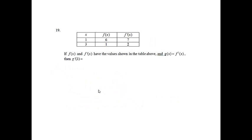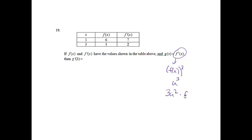Question 19. f of x and f prime of x have values shown in the table, and g of x equals f cubed of x. Find g prime of 3. This function is the same as f of x raised to the third power. Using a u substitution, calling this u cubed, the derivative is 3u squared times the derivative of the inside. So g prime of x equals 3 times f of x squared times f prime of x.